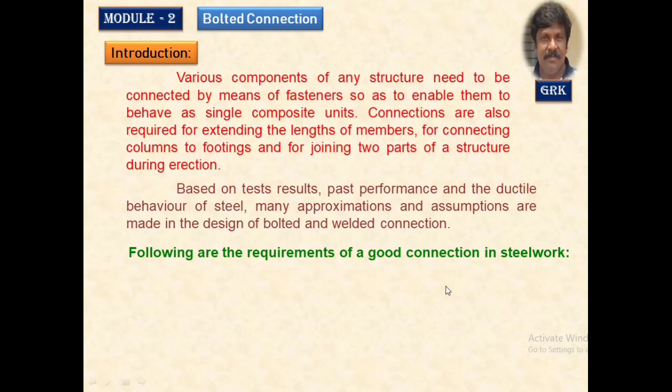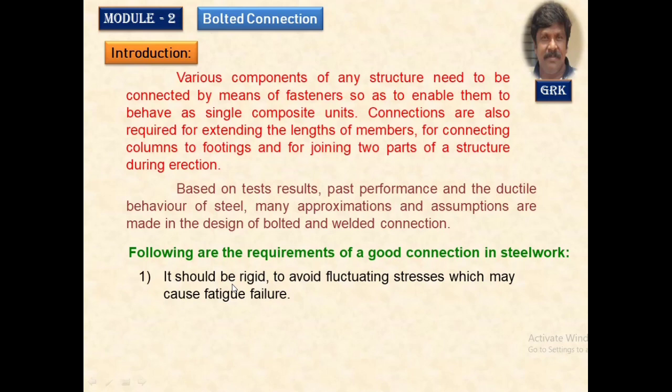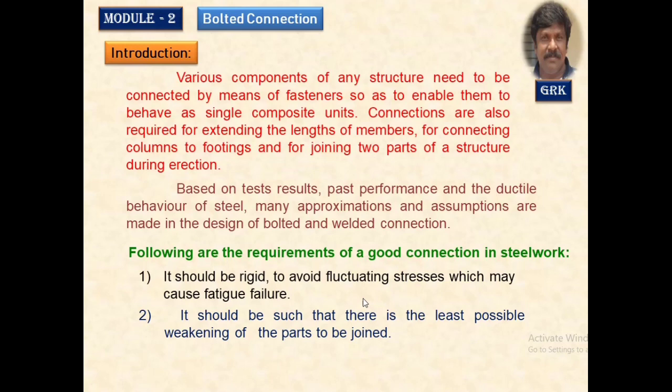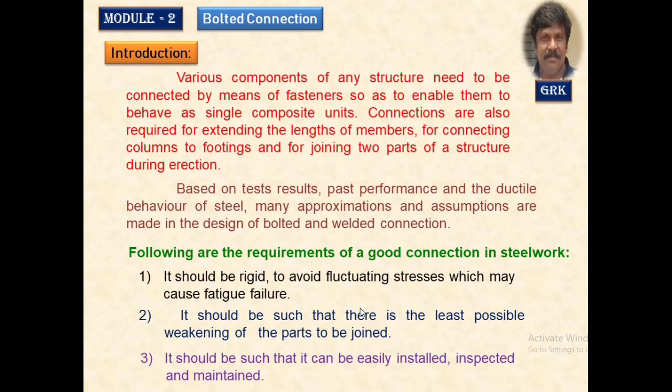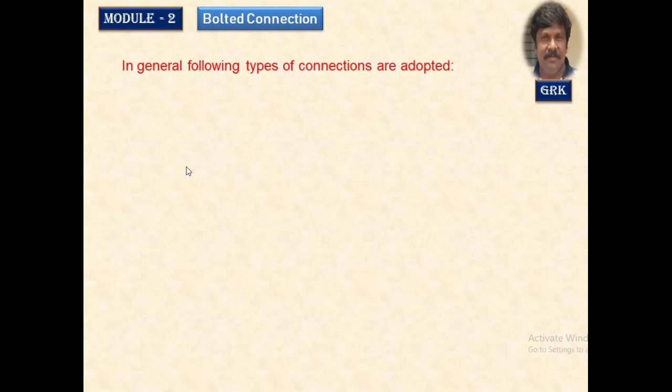Following are the requirements of a good connection in a steel structure. It should always be very rigid — the connection should not be subjected to fluctuation due to fatigue failure. It should not be a weakening one; the joints shall not be of lower strength. It should be easy for inspection — wherever we make a connection, it should be easy to view and make any corrections.